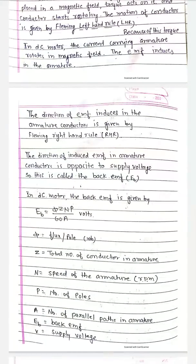phi equals flux per pole in Weber. Z, total number of conductors in armature. N, speed of the armature in RPM.